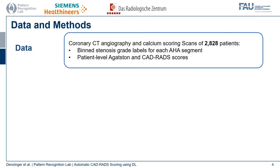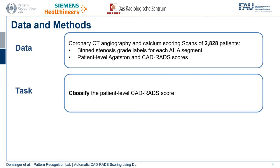In our work we leverage a data collection of coronary CT angiography and calcium scoring scans of 2828 patients, with stenosis grade labels on segment level — where a coronary segment can be seen as an edge in the coronary artery tree. At the patient level, the Agatston and CAD-RADS scores are also annotated. The task at hand is the direct assessment of the patient-level CAD-RADS score.